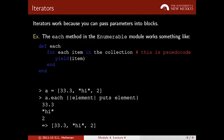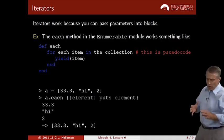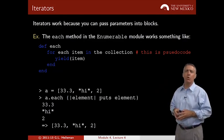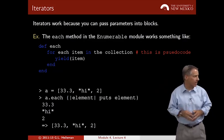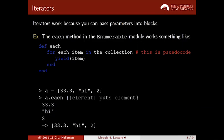Here's an example. Iterators work because you can pass parameters into blocks. This is roughly how the each method works in the enumerable method. It works something very much like this. We've got this definition of the method each, and then there's a loop that says for each item in the collection. This is pseudocode because this is very roughly how things are implemented.